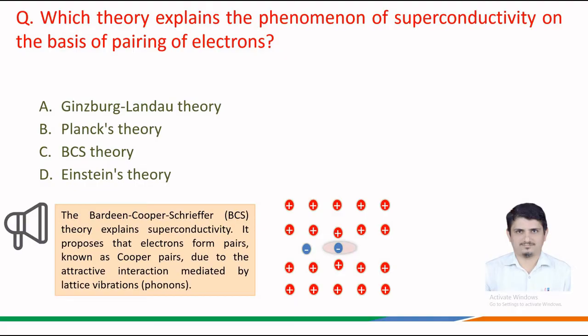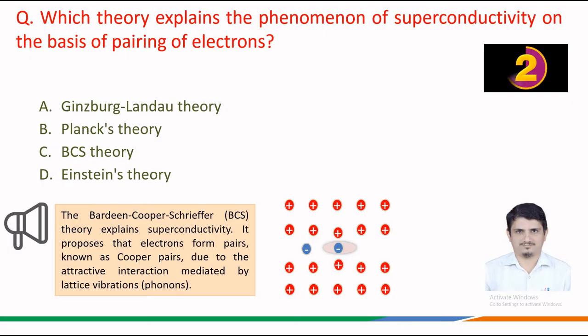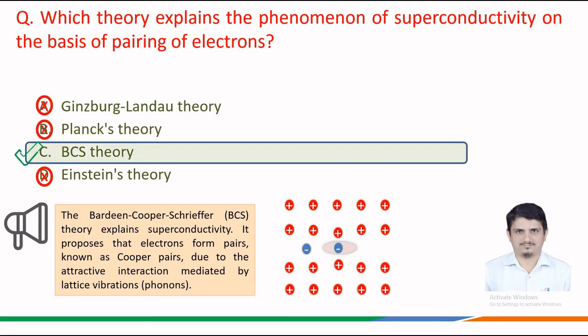We must remember that the Bardeen-Cooper-Schrieffer theory, famously known as BCS theory, explains superconductivity. It proposes that electrons form pairs, known as Cooper pairs. The formation of these Cooper pairs is due to the attractive interaction mediated by lattice vibrations, i.e., phonons. Therefore, the correct answer is option c — BCS theory.